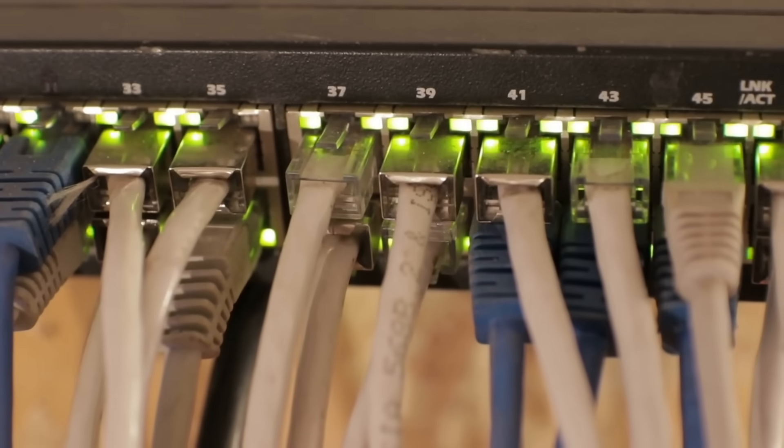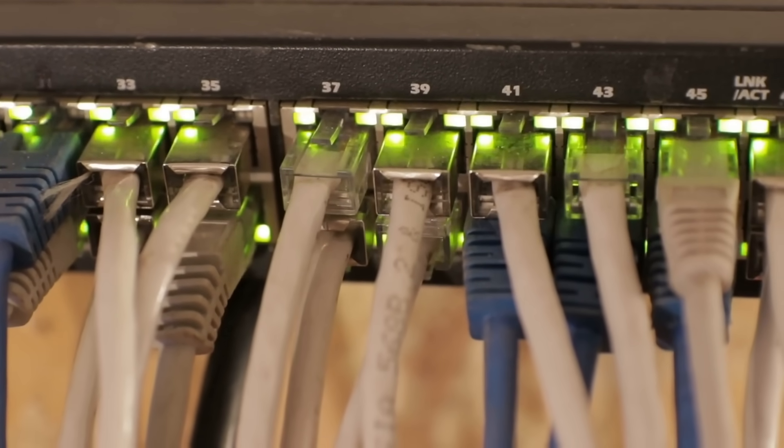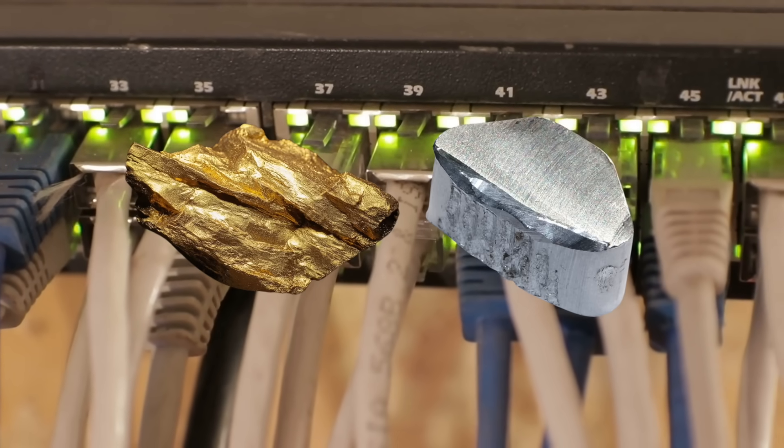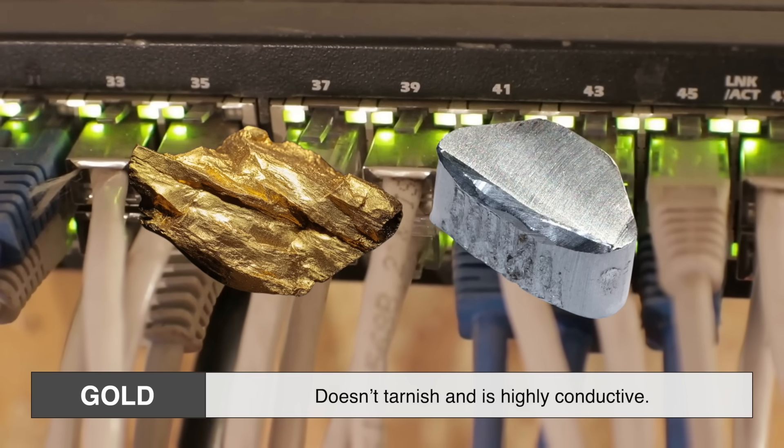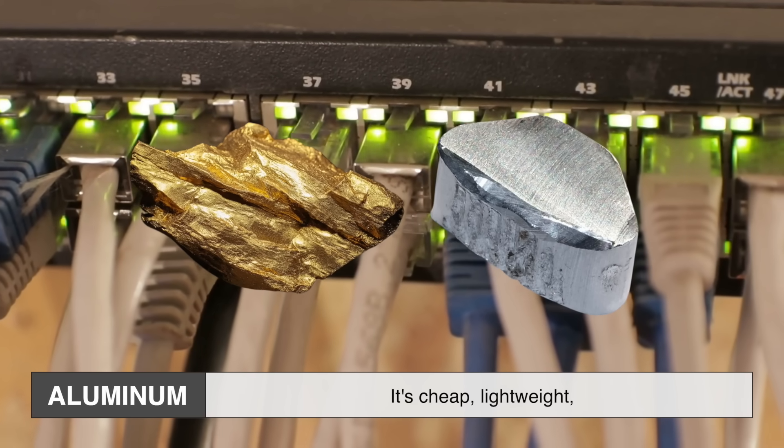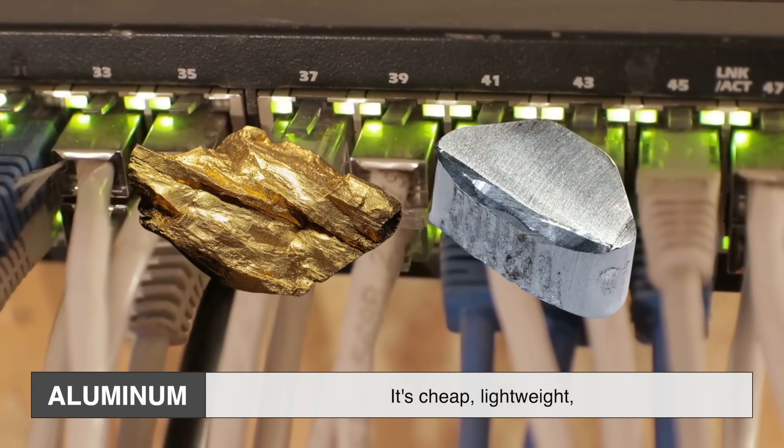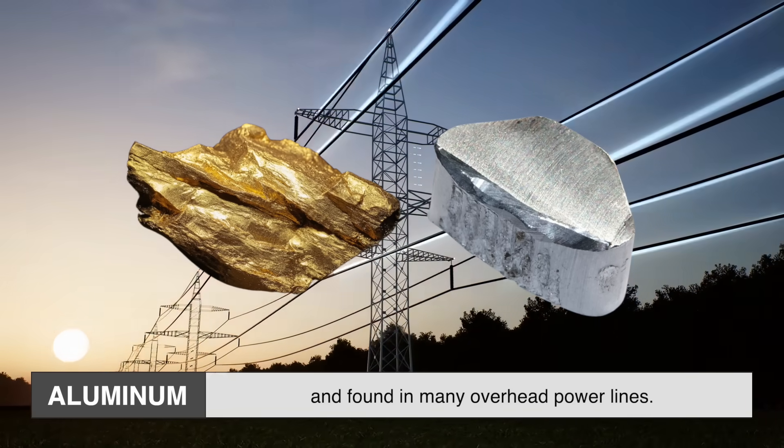Now you might be wondering, if we want good conductivity, why not use gold or aluminum? Gold, after all, doesn't tarnish and is highly conductive, and aluminum is everywhere. It's cheap, lightweight, and found in many overhead power lines.